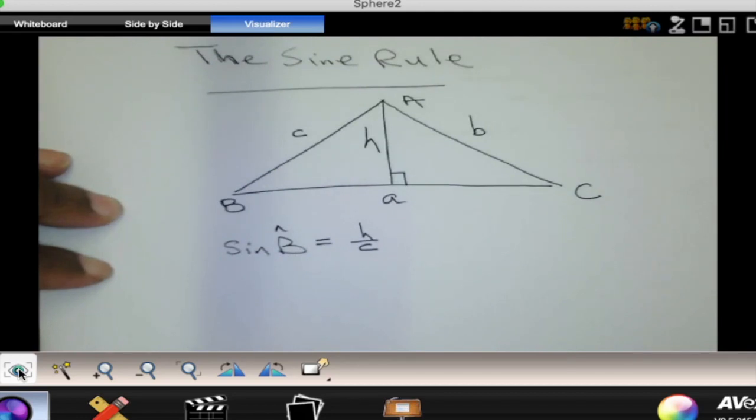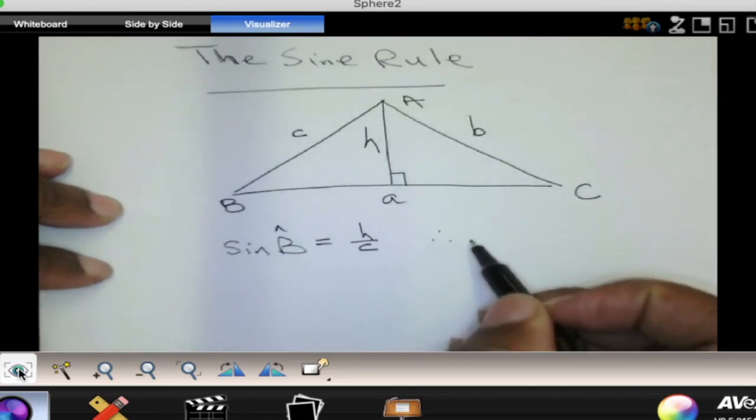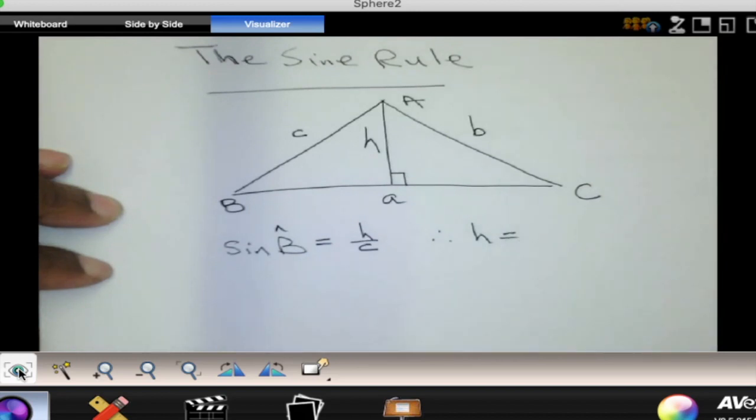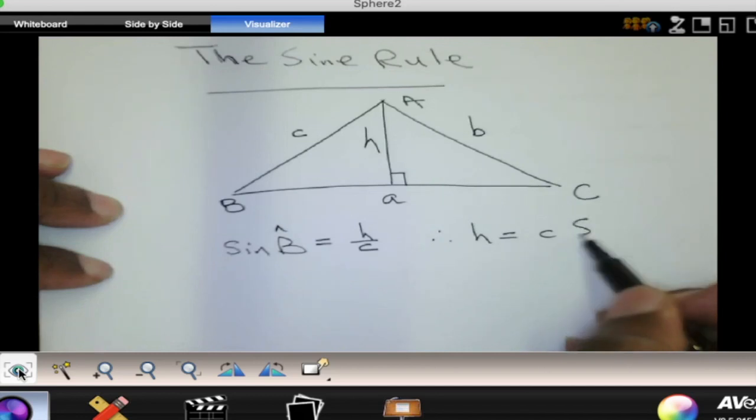So sine of angle B will be equal to h over c. And then we want to make h the subject there. That means h is equal to c multiplied by the sine of angle B.